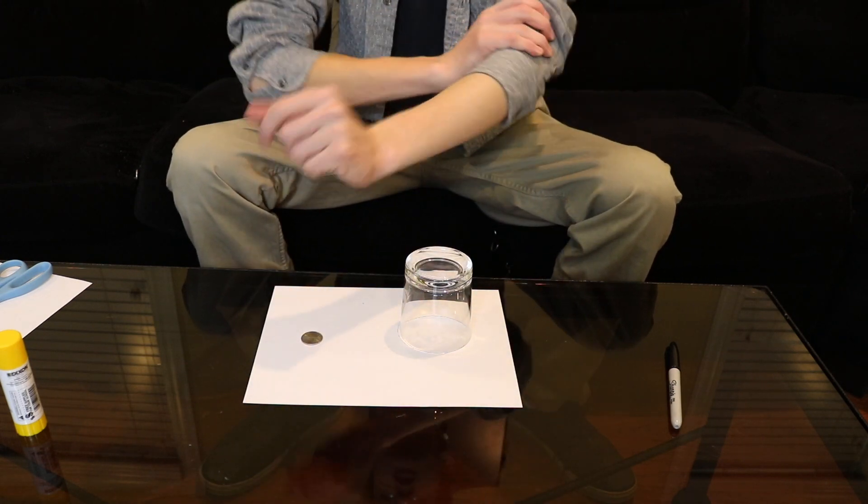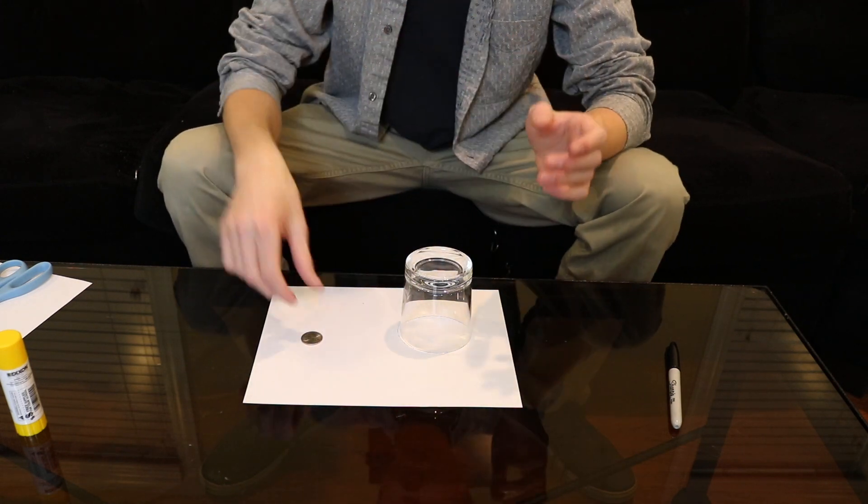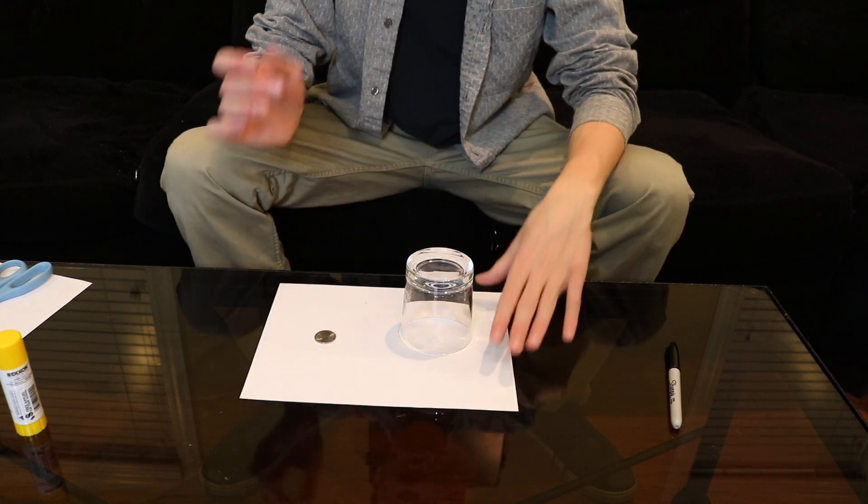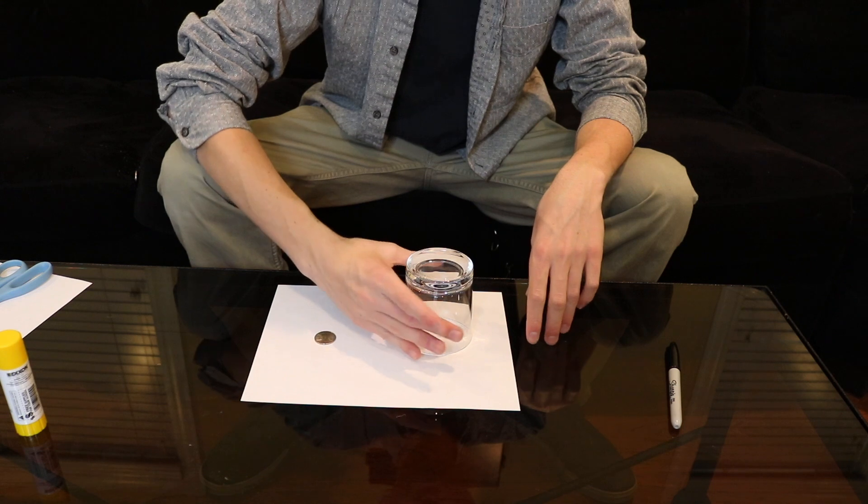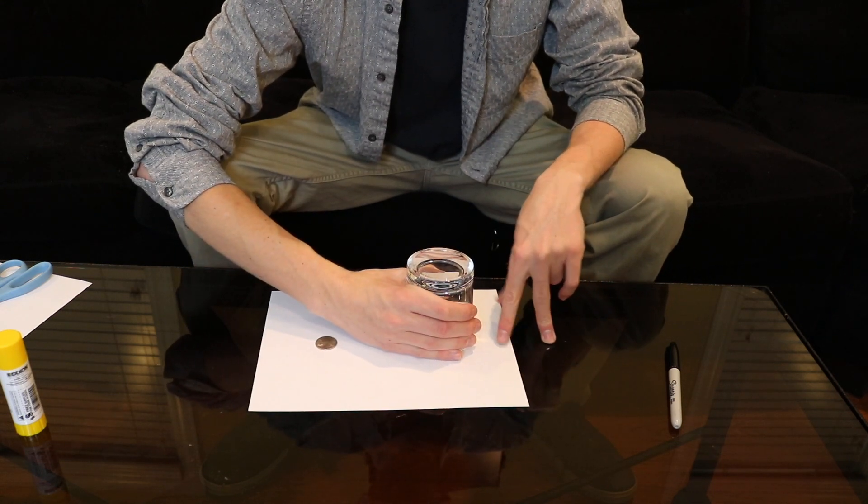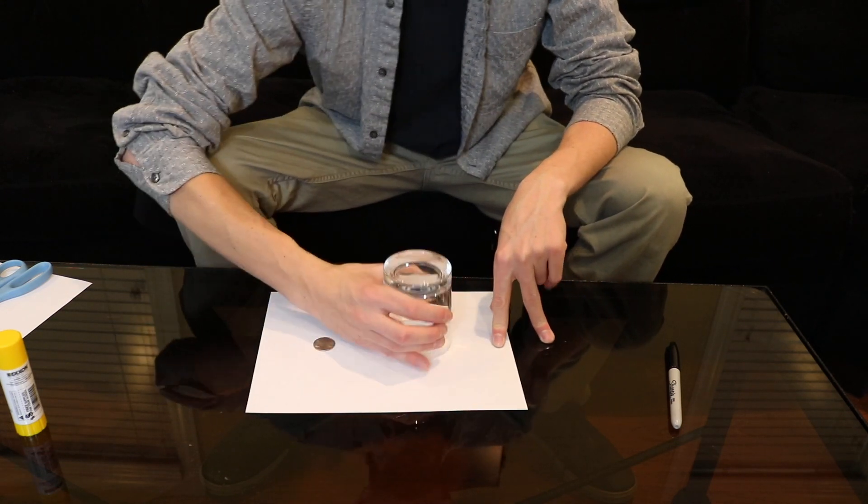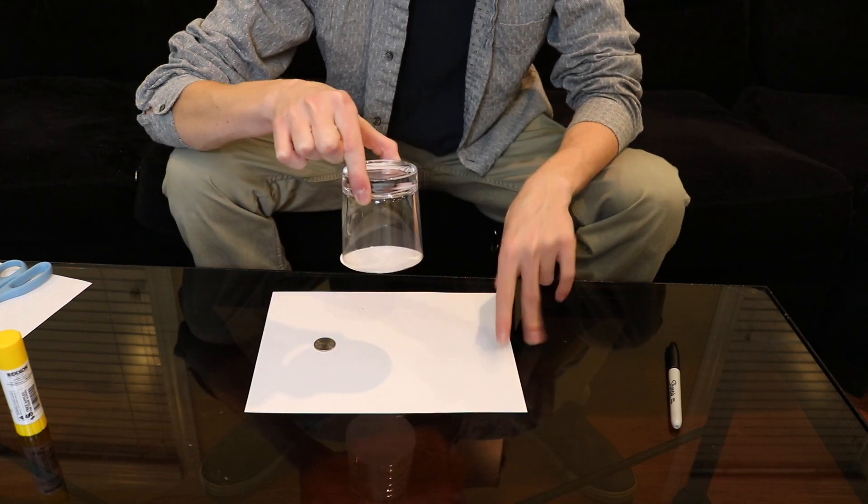You can roll up your sleeves, do whatever to make it look like the coin's not going anywhere and make it as fair as possible. But something you might have noticed in the performance is you cover up the glass here in the front. When you cover it up, you don't want to just pick it up because then they can obviously see there's something on the cup.